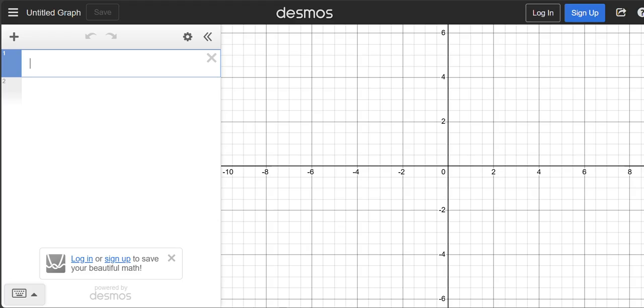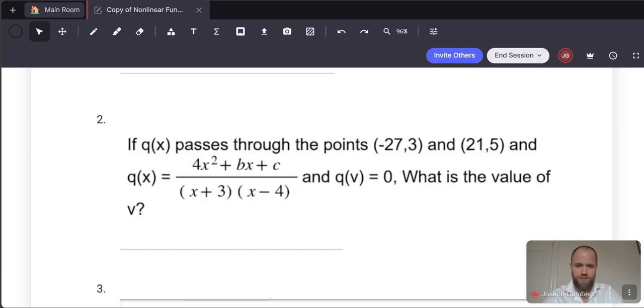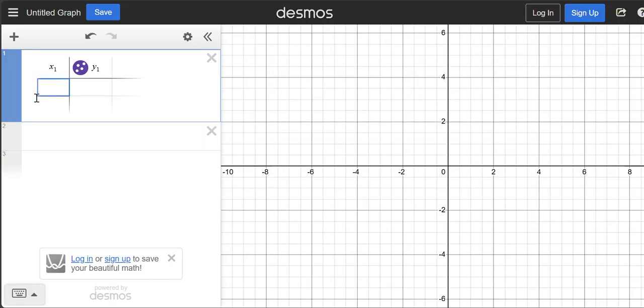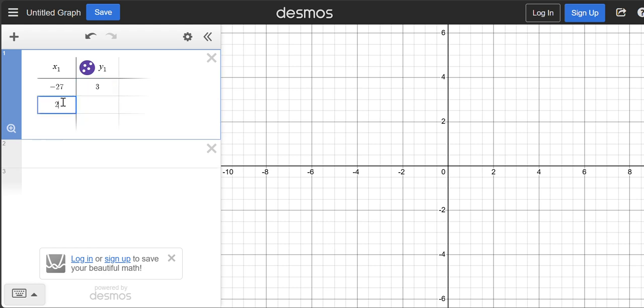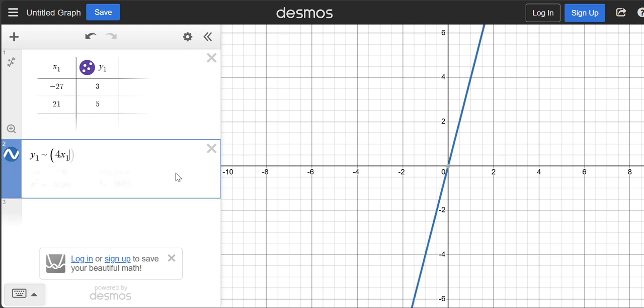So what I would do to solve this question is I would come to Desmos, I would insert a table, and in that table input these points (-27,3) and (21,5). And then with that, I would go ahead and put in the regression in a very similar format to the way that they presented it in the question.